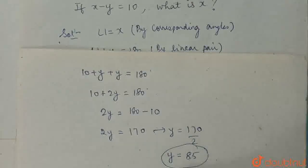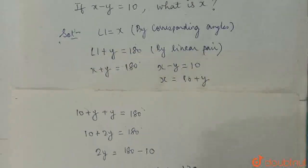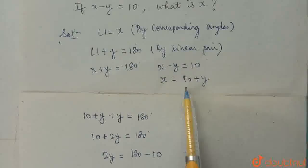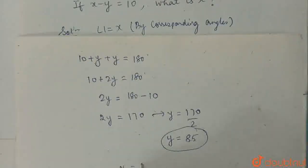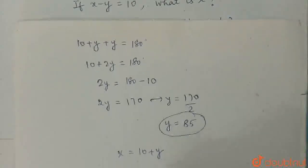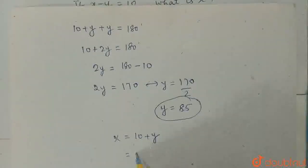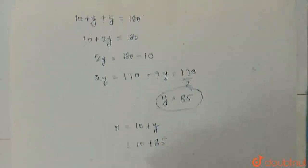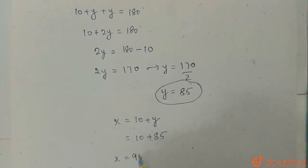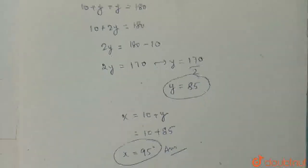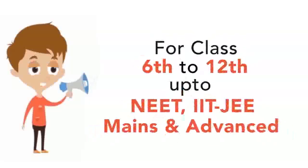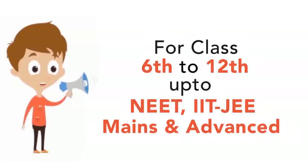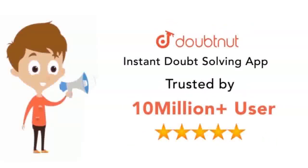Now, putting the value of y here for x, we can find the value of x. So x is equal to 10 plus y, this becomes 10 plus 85. So value of x becomes 95 degrees and hence, this is our answer.